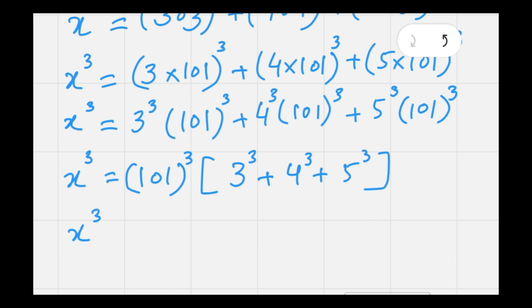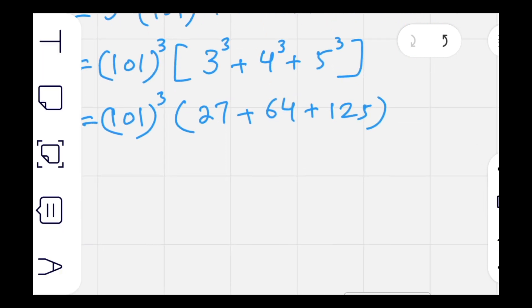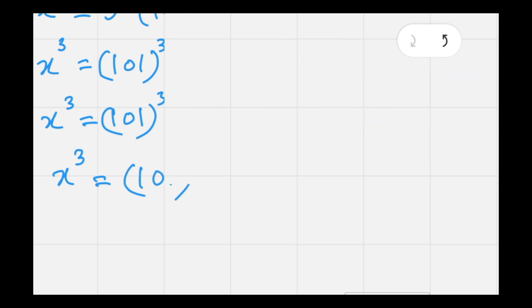We know that cube of 3 is 27, cube of 4 is 64, and cube of 5 is 125. Summing up all the numbers in the parenthesis, we will get 216, which is actually the cube of 6.